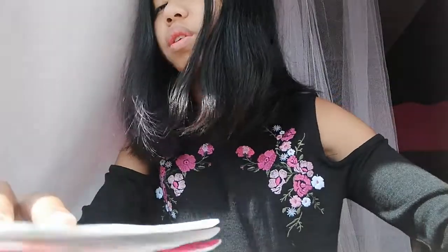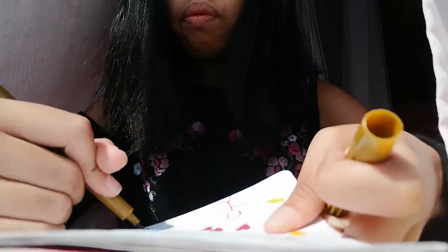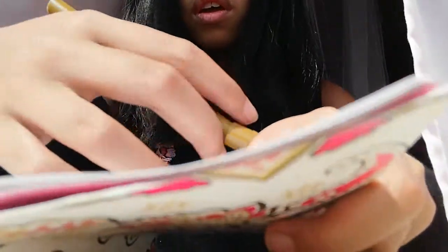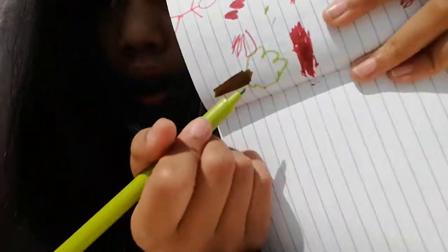I'll make a tree. This one doesn't work. Oh, this one works pretty good. I'll make a tree. The brown one first for the branch. Yeah, that's my tree.